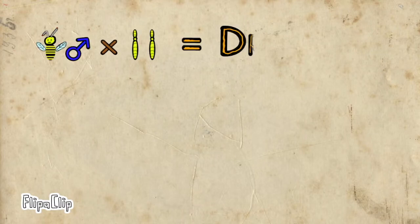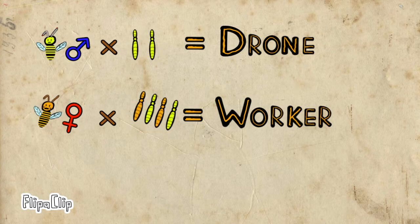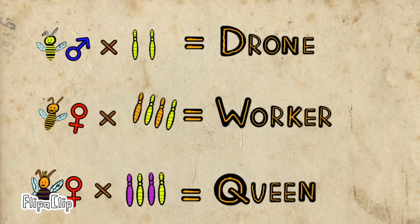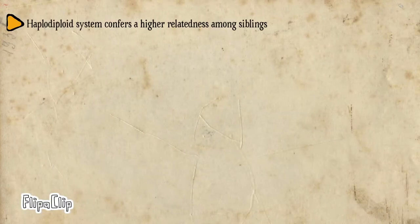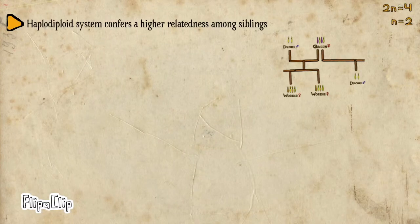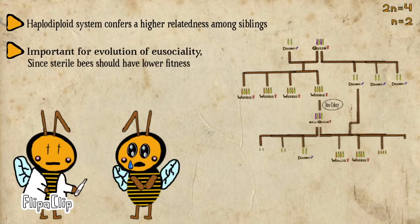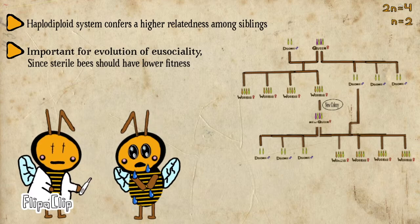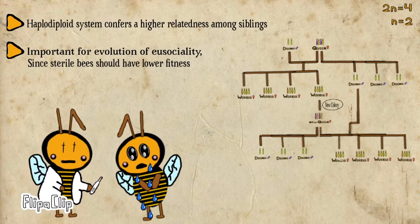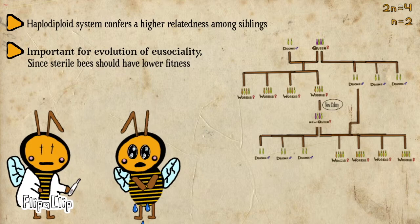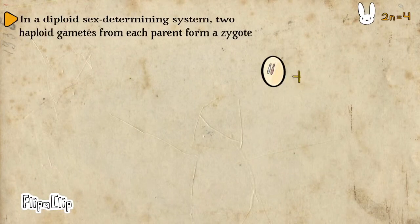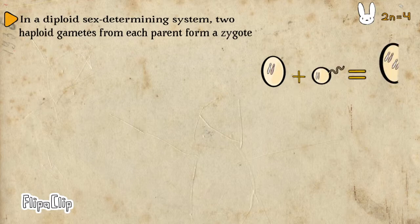In honeybee colonies, haploid males become the drones while diploid females become the worker bees, and one specific female is designated queen. Genetically, this haplodiploid system results in a higher relatedness among sister siblings in a honeybee population. This is important for the evolution of eusociality, since worker bees are sterile — hence technically lowering their fitness. In a diploid sex-determining system, two haploid gametes from each parent come together to make a zygote.